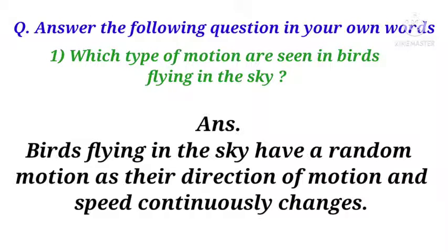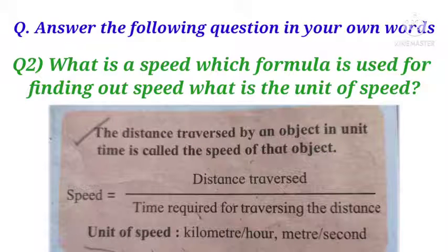Next, answer the following question in your own words. Question is which type of motions are seen in a bird flying in the sky. So here is the answer that how the bird flies and which motion is seen. Question number two: what is speed, which formula is used for finding out speed, what is the unit of speed, and here is the answer in front of you.